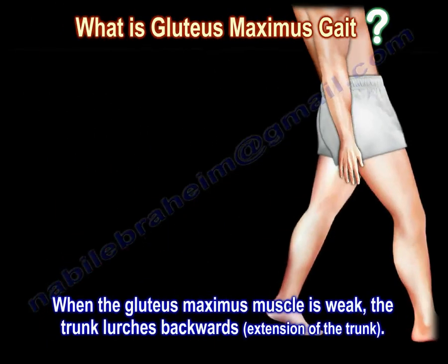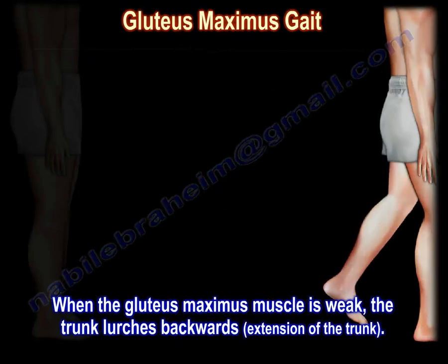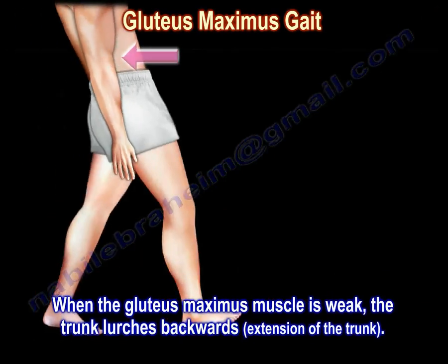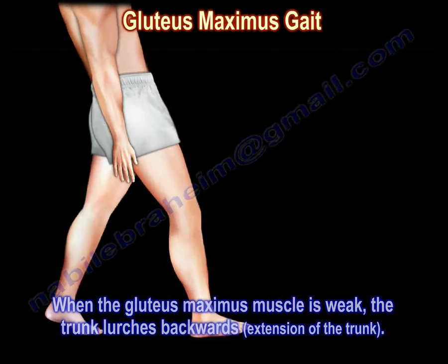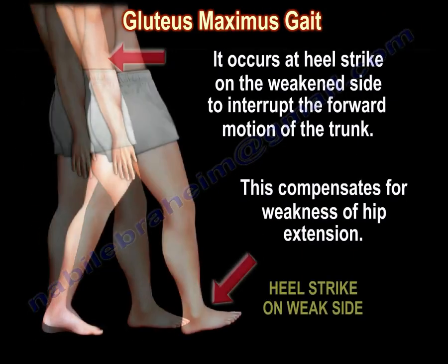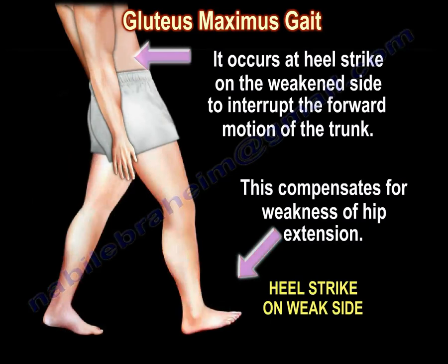When the Gluteus Maximus muscle is weak, the trunk lurches backwards. There will be extension of the trunk. It occurs at the heel strike on the weakened side to interrupt the forward motion of the trunk. This compensates for weakness of hip extension.